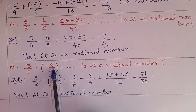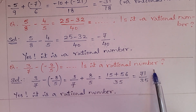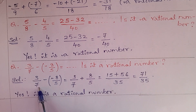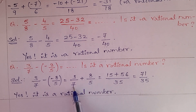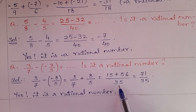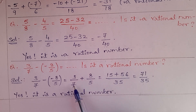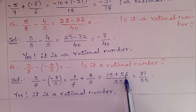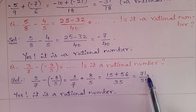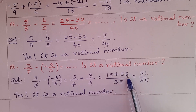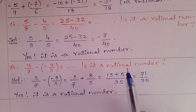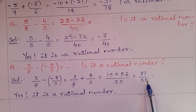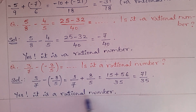Next question: 3/7 − (−8/5) — is it a rational number? Minus of minus becomes plus. Take the LCM of 5 and 7, which is 35. Using the butterfly method: 3 × 5 = 15, plus 7 × 8 = 56. Then 15 + 56 = 71. So the answer is 71/35. Yes, it is a rational number.